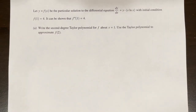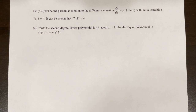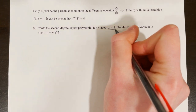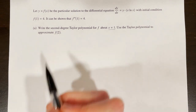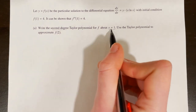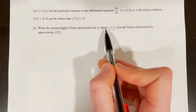Let y equals f of x be the particular solution to the differential equation dy/dx equals y times x times the natural log of x with initial condition f of 1 equals 4. It can be shown that f double prime of 1 is equal to 4. Part a says write the second degree Taylor polynomial for f about x equals 1, which is different from before because we are now centered around x equals 1, not x equals 0. Use the Taylor polynomial to approximate f of 2.